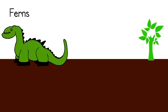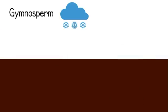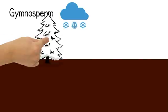With less carbon in the atmosphere, the world slowly cooled, leading to a drier, colder planet. Amphibians dried out, and dinosaurs took their place. Because this is where coal is from, the period is called Carboniferous, meaning coal-bearing.